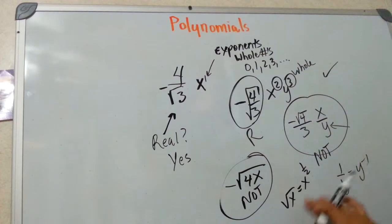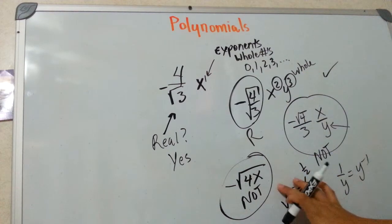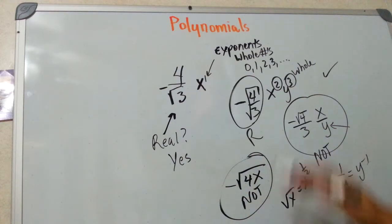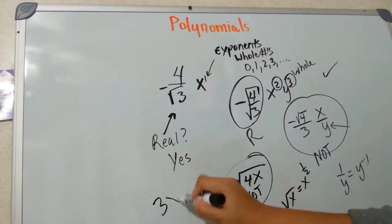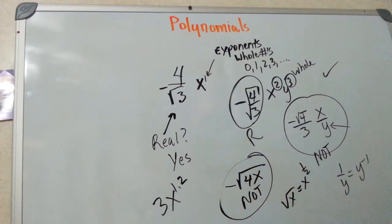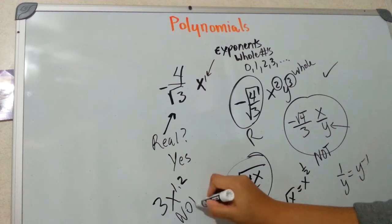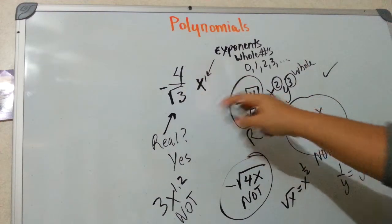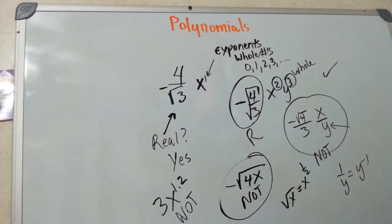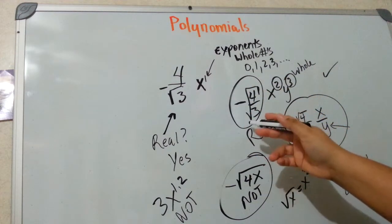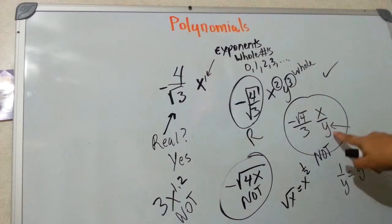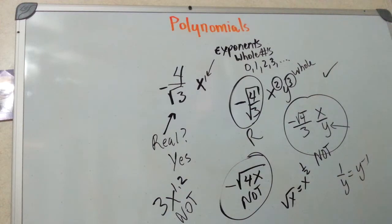Exponents have to be whole numbers. So if you see a variable under a radical sign, you automatically know that's not a polynomial. Or if your exponent is a decimal — you can't be a polynomial. You can have weird coefficients; that's fine. As long as the coefficient is real, you're good. And as long as your exponents are whole, no variables in the denominator, and no variables under radical signs, then you would be considered a polynomial.